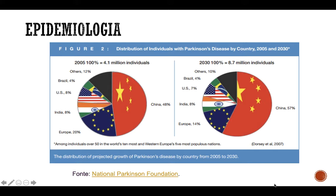para 8,7 milhões em 2030. Nesse gráfico, podemos observar também que em 2005 o principal país que diagnosticava pessoas com a doença de Parkinson era a China, com 48% dos casos, seguido da Europa com 20% dos casos. O Brasil, em 2005, apresentava 4% dos casos. As projeções para 2030 são que a China aumente de 48% para 57% e que a Europa diminua de 20% para 14%. O Brasil tende a ficar com os mesmos 4%, mas o número absoluto de casos também deve aumentar.